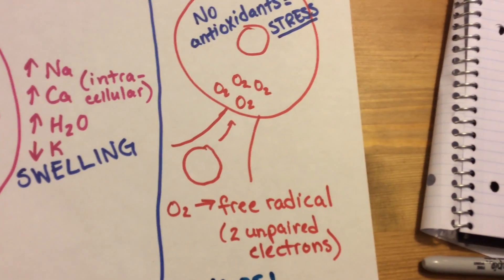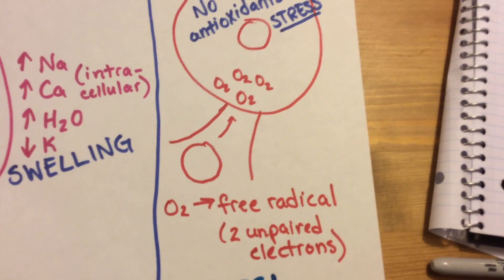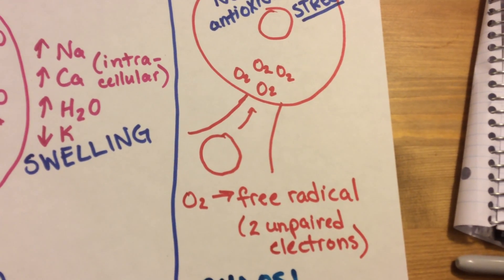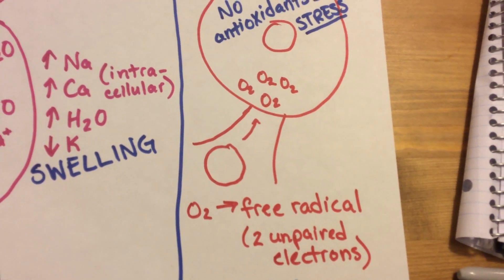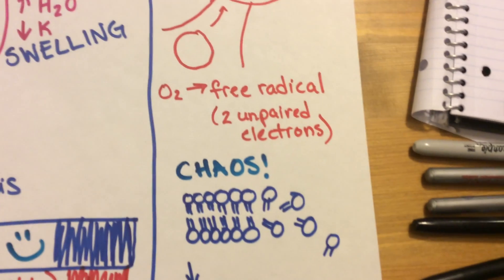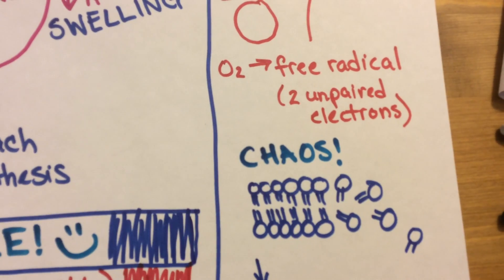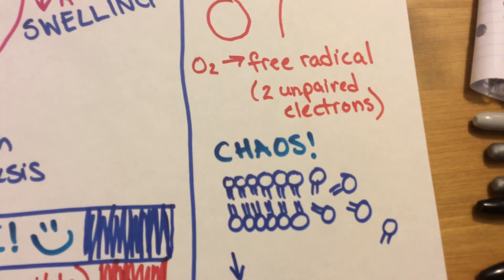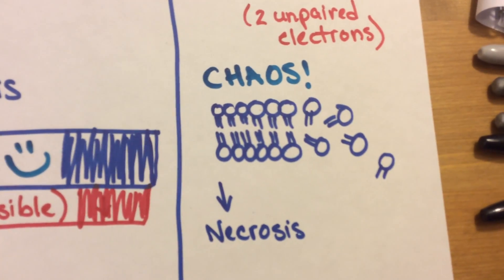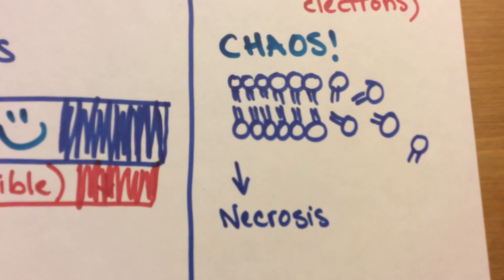We call this oxidative stress. Because oxygen, when there are no antioxidants present, acts as a free radical — remember it has those two unpaired electrons looking to fill the valence shell. When it can't find them it causes serious damage. It destroys the phospholipid bilayer cell membrane, creating holes and tearing it apart, which again leads to necrosis.